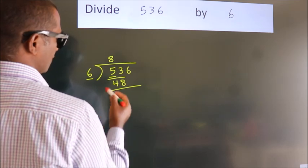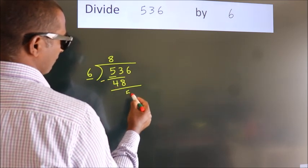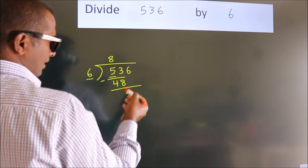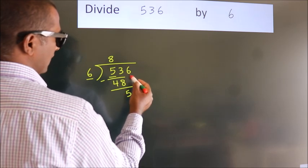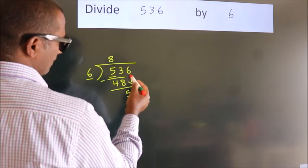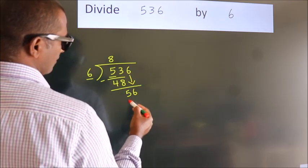Now we should subtract. We get 5. After this bring down the next number. So 6 down. So 56.